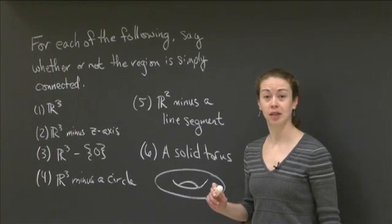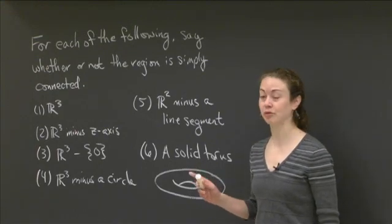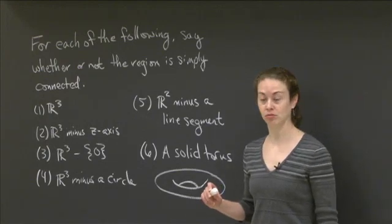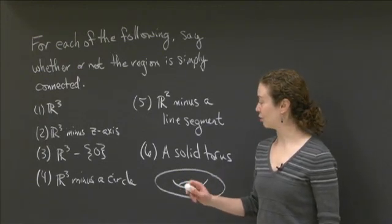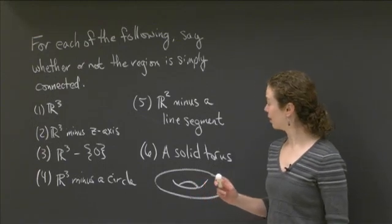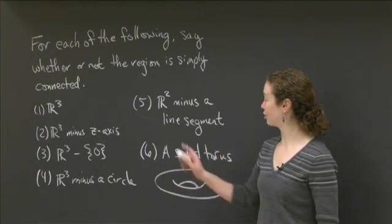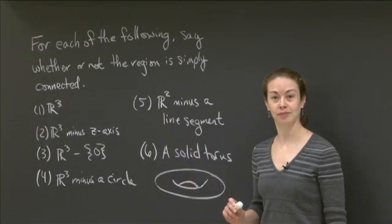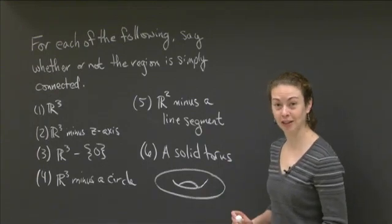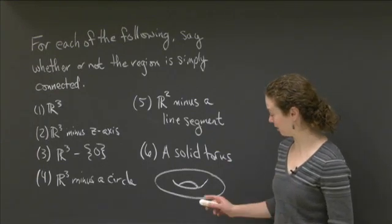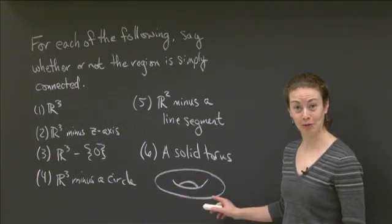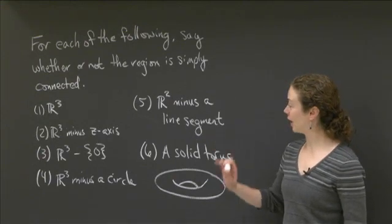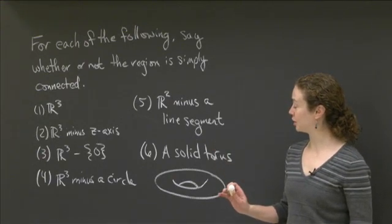The first one is R3. The second one is R3 with the entire z-axis removed. The third one is R3 with the origin removed. The fourth one is R3 with a circle removed. The fifth one is R2 minus a line segment. And the sixth one is a solid torus — it looks like a donut, includes the inside of the donut, so it's not hollow.